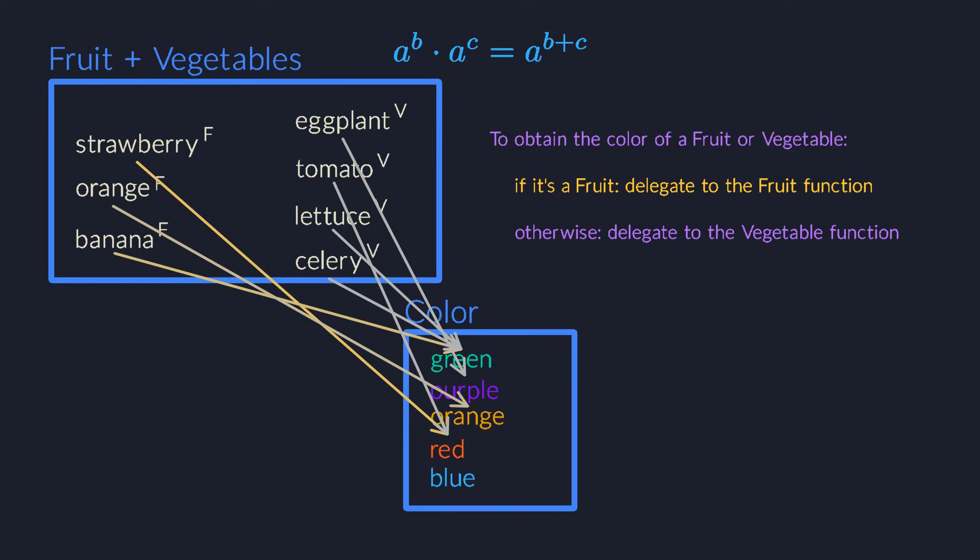If we give it a fruit, it will then use the first function from the pair to obtain its color. In case of a vegetable, it uses the other function. So you see that the new function really is equivalent to a pair of functions, one for each type of inputs in the sum.